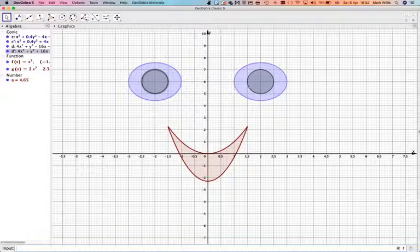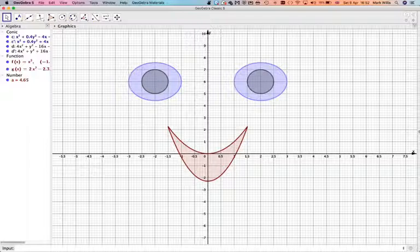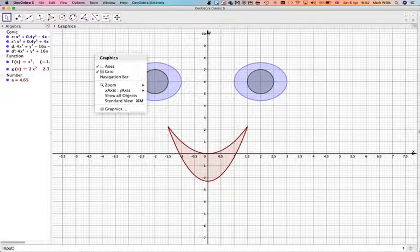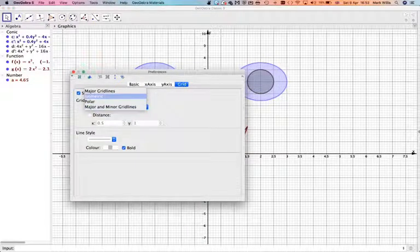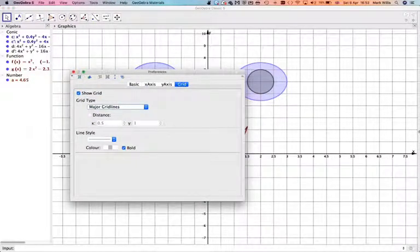Okay, and then we have the finished, sort of finished drawing. Now, if you don't want all the grid, then if you right click and then go to graphics, grid, and then you can just have the major grid lines like they are in your original drawing.